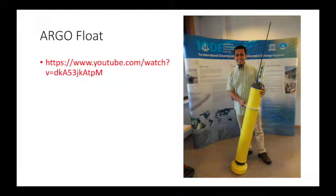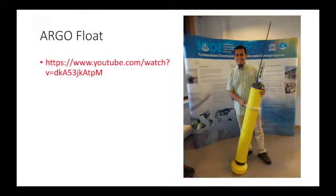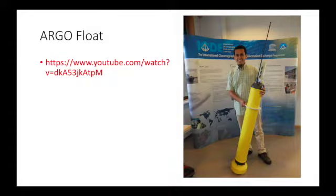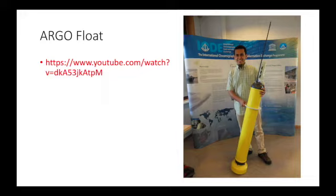That is all for the temperature-salinity diagram. I hope you understand what we discussed, especially understanding water masses and how temperature and salinity can define them. There is a YouTube video you can access to give you some perspective on Argo floats — and here is a photo of me holding an Argo float. Argo floats have dramatically changed the way we understand our oceans over the past 10 years. About 6000 floats are deployed in global oceans, with freely accessible data that you can extract and use to understand our ocean.